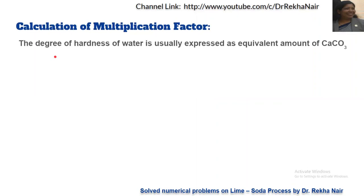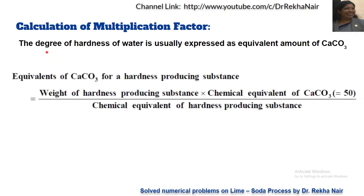Let us see how to calculate the multiplication factor. The degree of hardness of water is usually expressed in terms of calcium carbonate because of its molecular weight of 100, making calculations easy. The CaCO₃ equivalent for a hardness-producing substance = weight of the hardness-producing substance × (chemical equivalent of CaCO₃ ÷ chemical equivalent of the hardness-producing substance). This ratio is the multiplication factor.